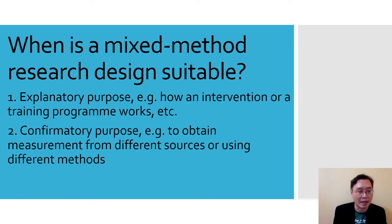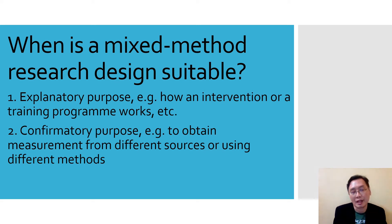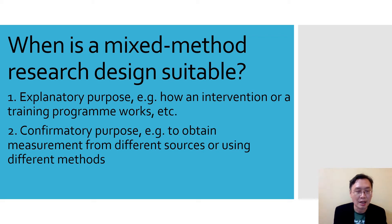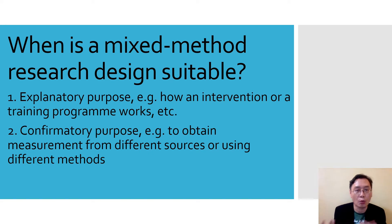When is mixed method research design suitable? Basically there are two kinds of research objectives that can lead to its use. The first one is explanatory purpose — your research objective might be asking how an intervention or training program was effective in achieving its outcome. The second one is confirmatory purpose — you want to obtain confirmation about the effectiveness of an instrument without relying on one assessment method or measurement tool.